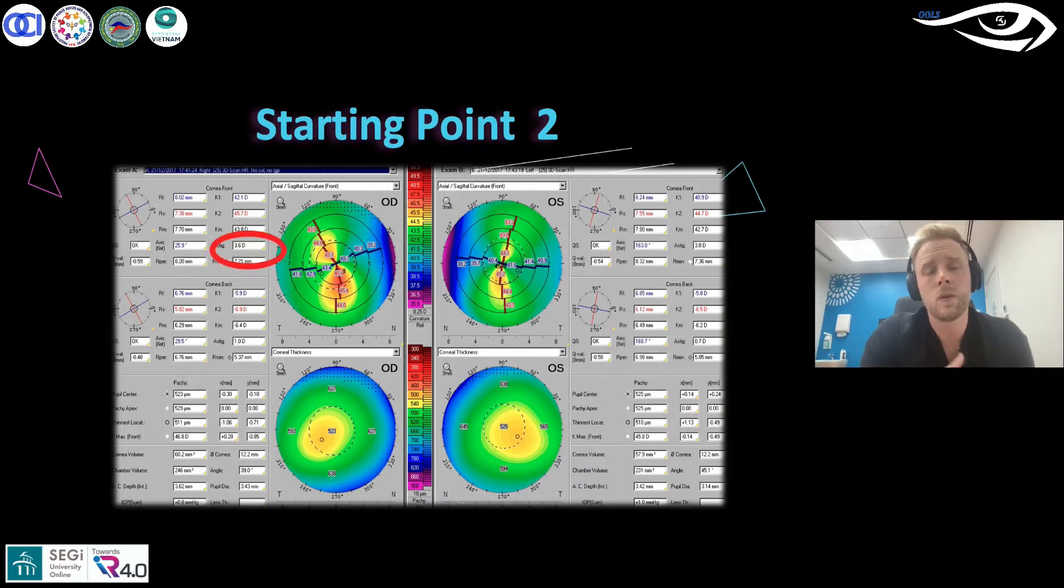What this does is it takes the average flat meridian on the front surface—and this is just the front surface we're talking about here—and the average steep meridian and takes them away. So it takes away the diopters and you can see, basically...